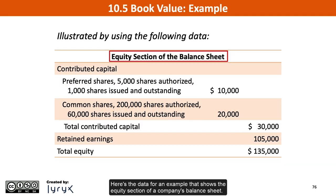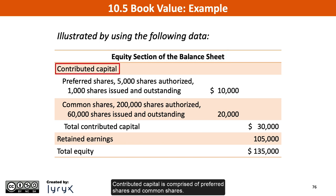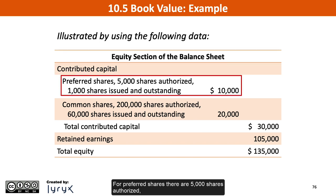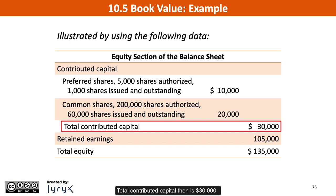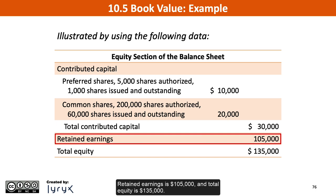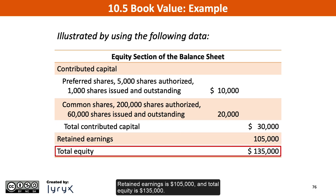Here's the data for an example that shows the equity section of a company's balance sheet, which we can use to illustrate the calculation of book value per share. Contributed capital is comprised of preferred shares and common shares. For preferred shares, there are 5,000 shares authorized, 1,000 shares issued and outstanding with paid-in capital of $10,000. For common shares, 200,000 shares have been authorized, and 60,000 shares are issued and outstanding, with paid-in capital of $20,000. Total contributed capital is $30,000. Retained earnings is $105,000, and total equity is $135,000.